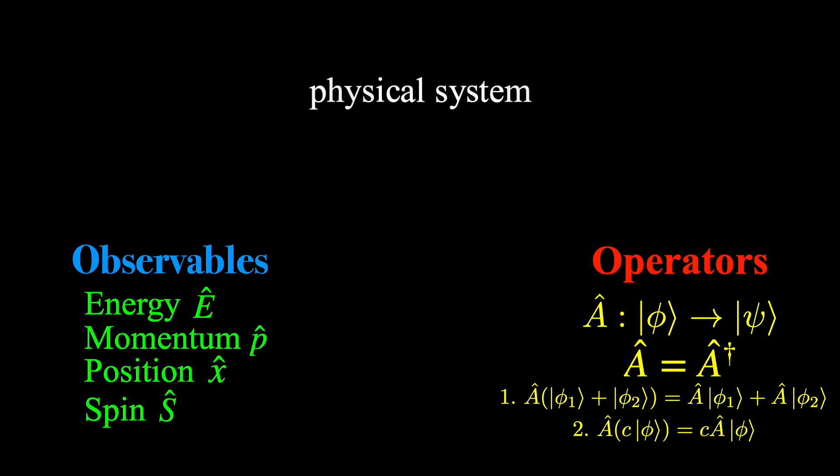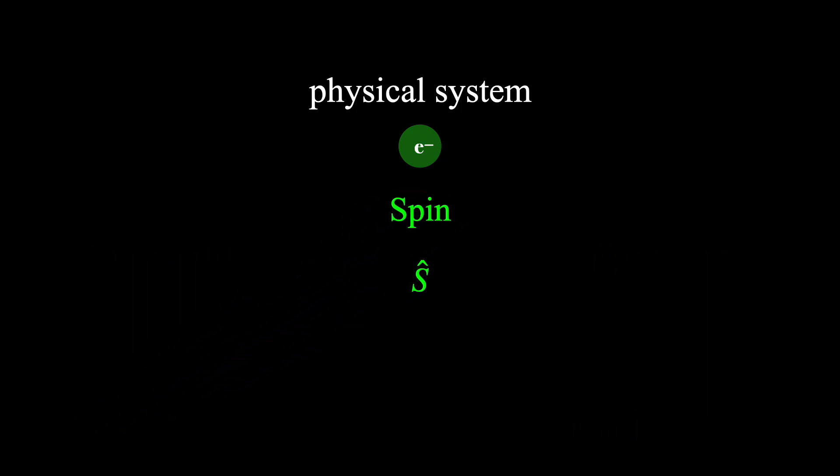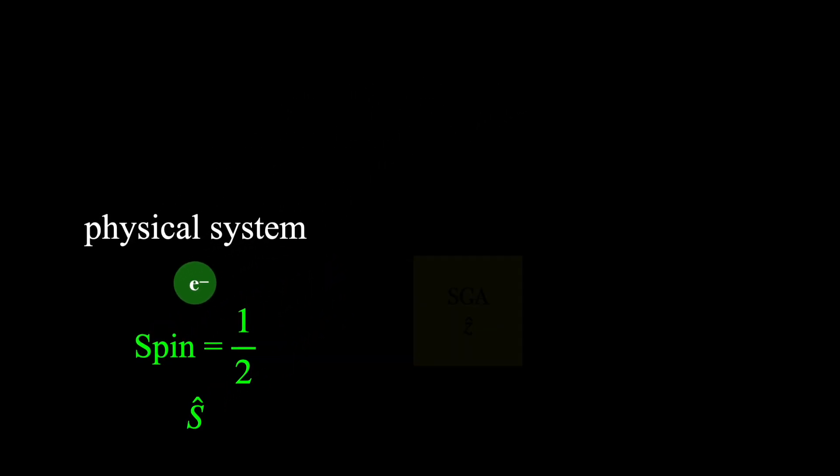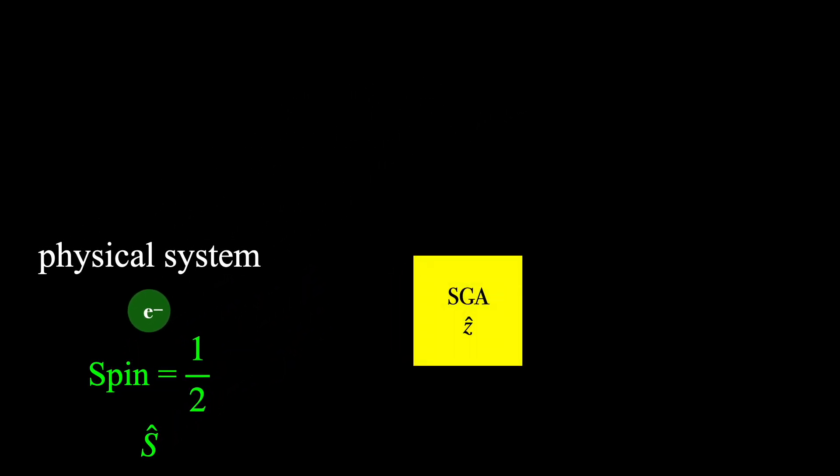Now let's go through a brief example to get some intuition for just how operators can represent observables. Let's consider the electron as our physical system and its spin as the observable we are interested in. Now you may have heard that an electron has a spin of one half. The experimental evidence for this goes all the way back to the Stern-Gerlach experiment, which I've mentioned a couple times in earlier videos.